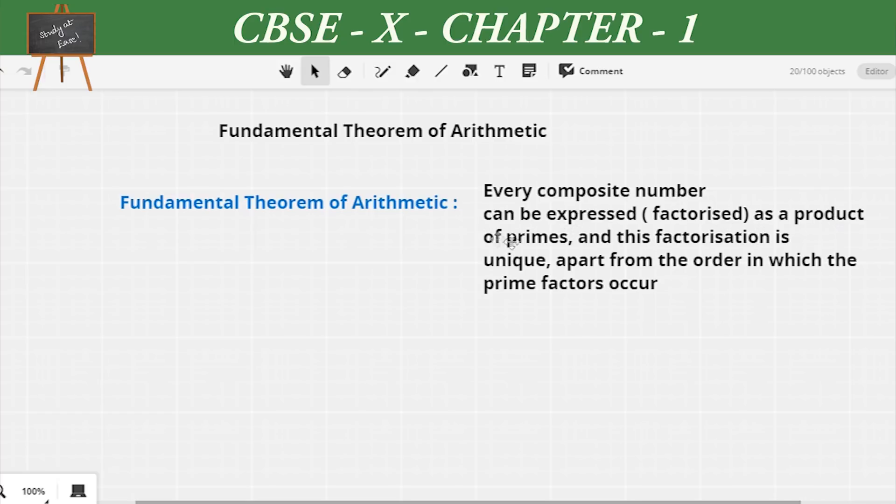The Fundamental Theorem of Arithmetic says every composite number can be expressed or factorized as a product of primes, and its factorization is unique apart from the order in which the prime factors occur. So we came across some terms like prime, composite, etc.